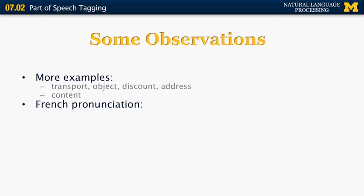Having the part of speech is important also for pronunciation purposes. In French, many words can be pronounced differently depending on their part of speech even if the spelling is exactly the same. For example, the word spelled 'est' can be the third person singular of the verb 'to be,' pronounced just 'a,' or it can be the word for 'east,' pronounced 'est.'